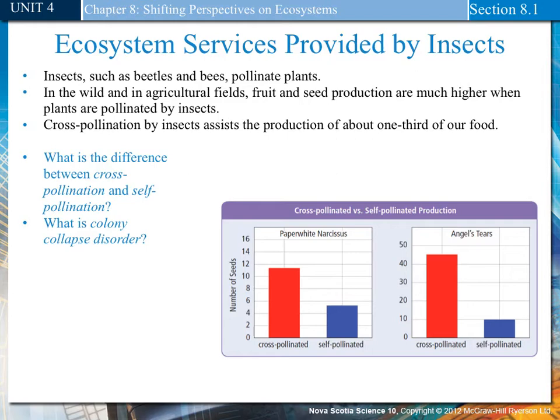What is colony collapse disorder? Colony collapse disorder is when only frail young worker bees and the queen bee remain in the hive. All the mature workers are gone, and the young worker bees and the queen bee cannot maintain the hive, so it collapses.